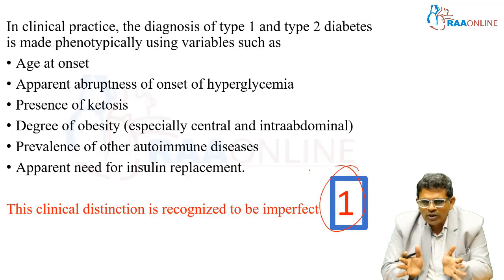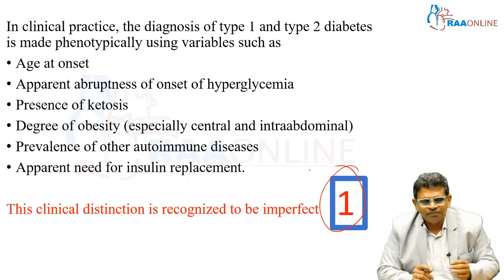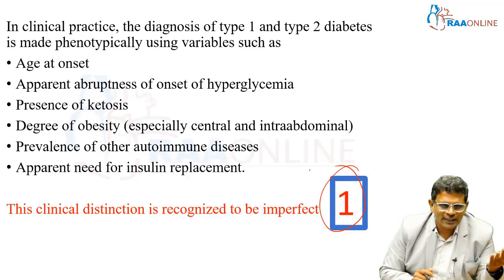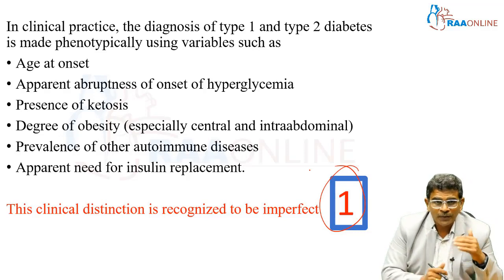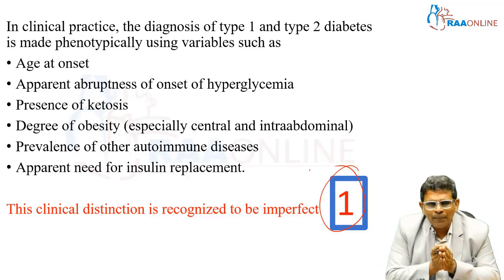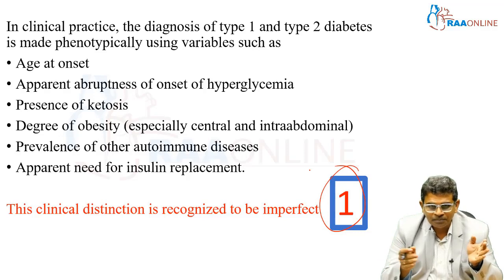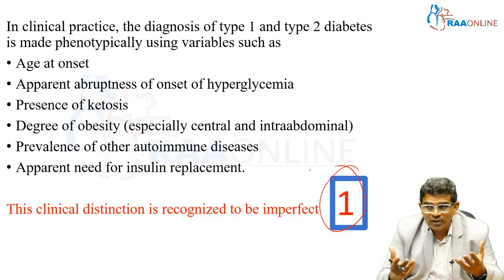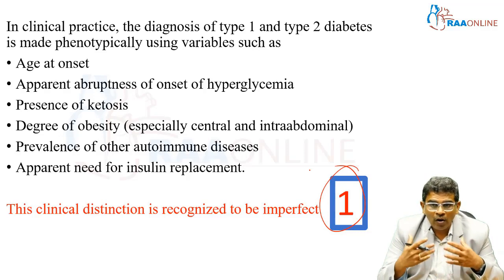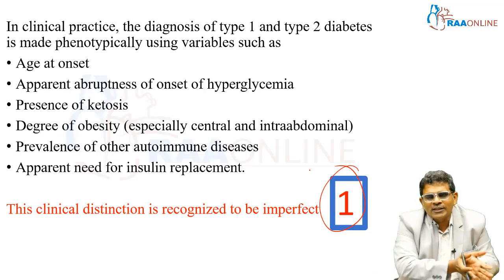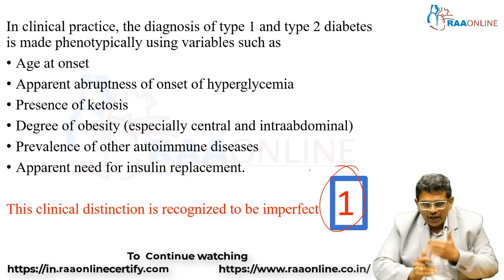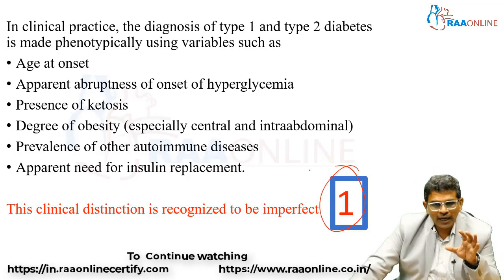In phenotypical classification, we look at the patient when they come in. We assess: the age of onset — if the patient is young, less than 20–25 years, we tend to consider Type 1. We also look at the apparent abruptness of hyperglycemia onset, presence of ketosis, degree of obesity (obesity suggests Type 2), presence of other autoimmune diseases, and whether there is an apparent need for insulin replacement and how much. All these phenotypical features help determine whether the patient belongs to Type 1 or Type 2. ADA says look at the antibody, but clinically we use phenotyping — this is the first imperfection in our classification approach.